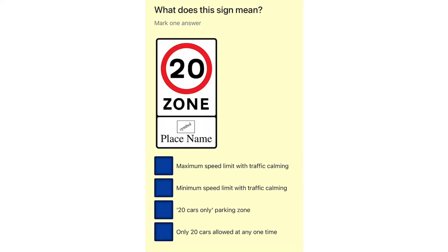What does this sign mean? Maximum speed limit with traffic calming. Minimum speed limit with traffic calming. 20 cars only parking zone. Only 20 cars allowed at any one time.